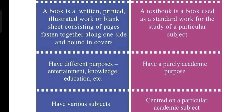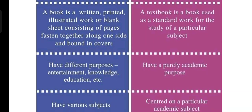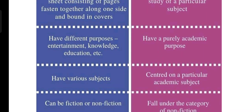A book can have different purposes — entertainment, knowledge, education — but a textbook has only a purely academic purpose. A book can cover various subjects, but a textbook is centered on a particular academic subject. For example, an English textbook is centered on that particular academic subject, while a book can be of any subject or any title.